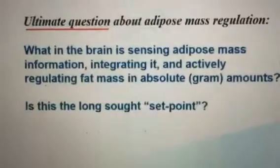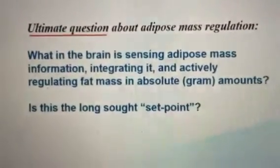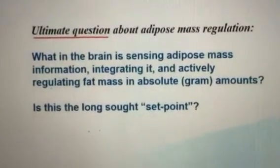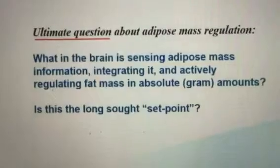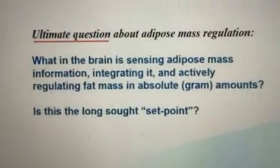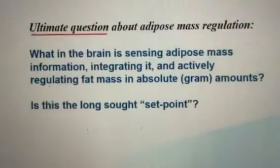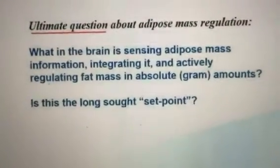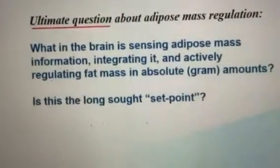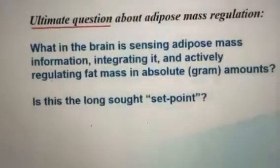We haven't answered all the questions — we've really just started asking them. The ultimate question about adipose mass regulation is: what in the brain is sensing adipose mass information, integrating it — because you have multiple depots — and actively regulating fat mass in absolute gram amounts? Is this the long-lost set point?